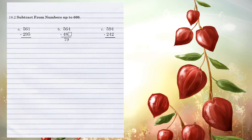Unit 18.2: Subtract from numbers up to 600. Let's look at Example A. When we look at the 1's column, you cannot subtract 5 from 1. So we have to go over to the 10's column and borrow from the 6 and make it a 5. That in turn makes the 1 an 11. So 11 minus 5 is 6.